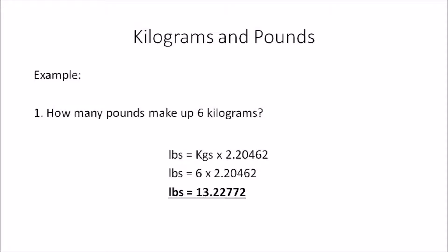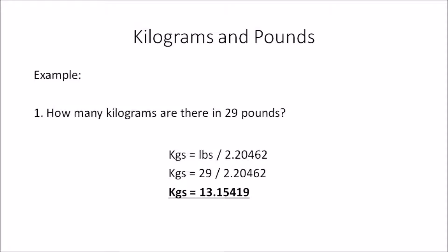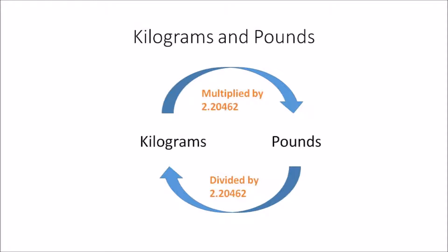Let's look at another example converting pounds to kilograms: how many kilograms are there in 29 pounds? Using the formula kilograms = pounds ÷ 2.20462, we substitute 29: 29 ÷ 2.20462 = 13.15419 kilograms.